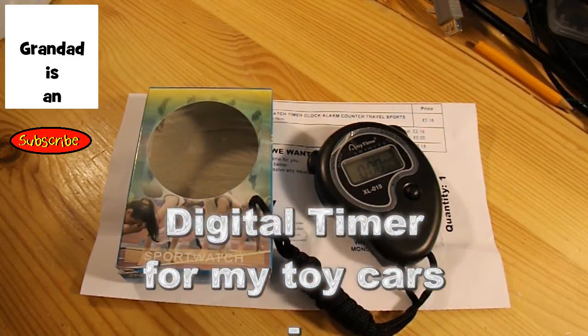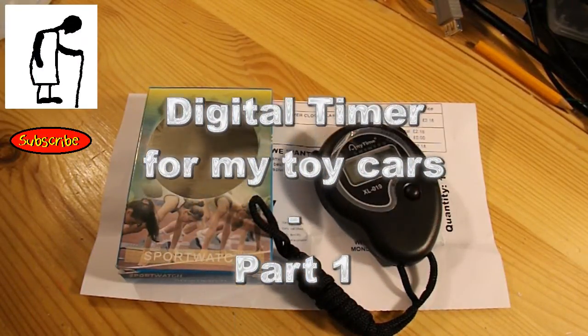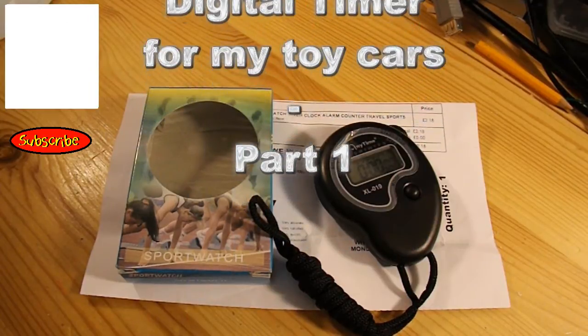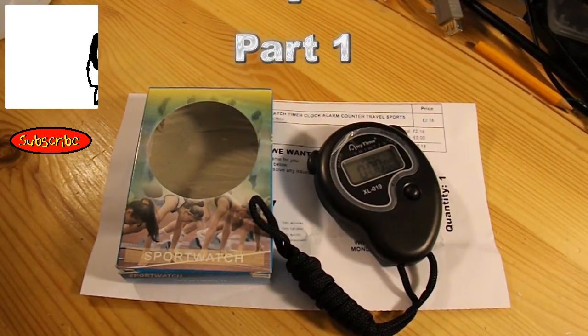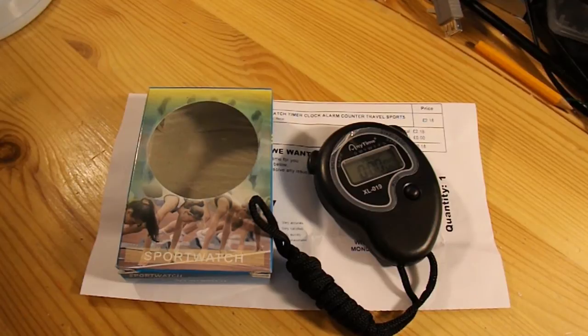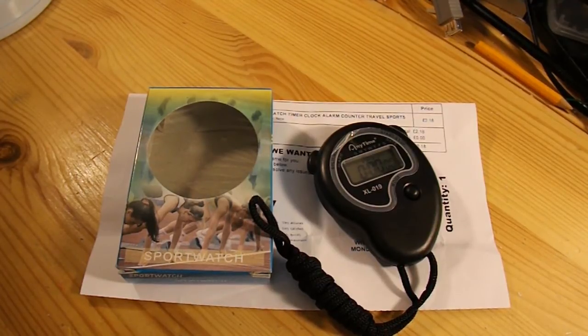Hi guys, in this project I'm going to make myself a digital timer for my rubber band powered cars so I can see how fast they go in my kitchen, which is a fairly short distance so it's not going to be that accurate but it will give me some idea of how fast they go.